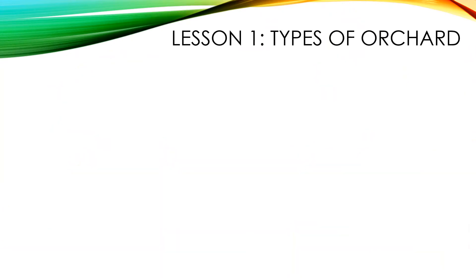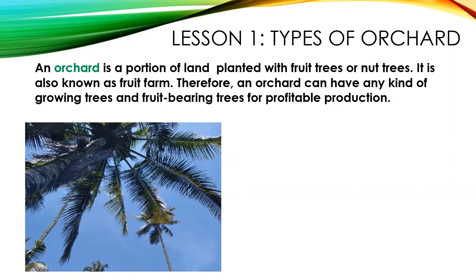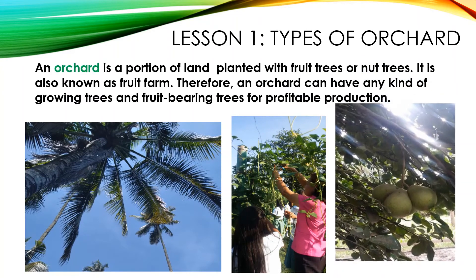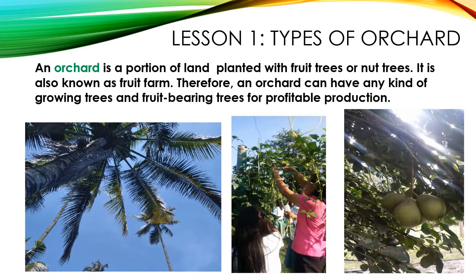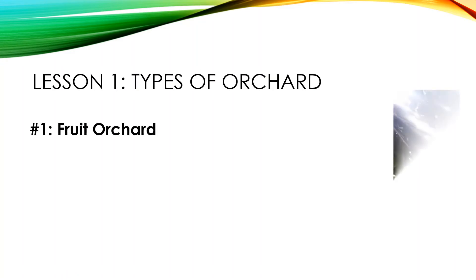Let's begin right away with Lesson 1: Types of Orchard. An orchard is a portion of land planted with fruit trees or nut trees. It is also known as a fruit farm. Therefore, an orchard can have any kind of growing trees and fruit-bearing trees for profitable production. Let's talk about the types of orchard.